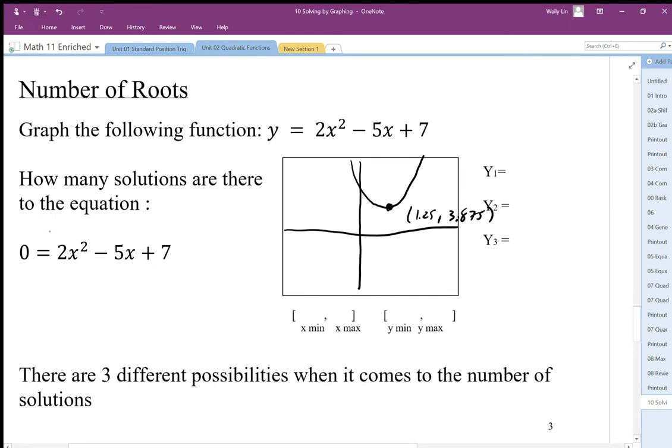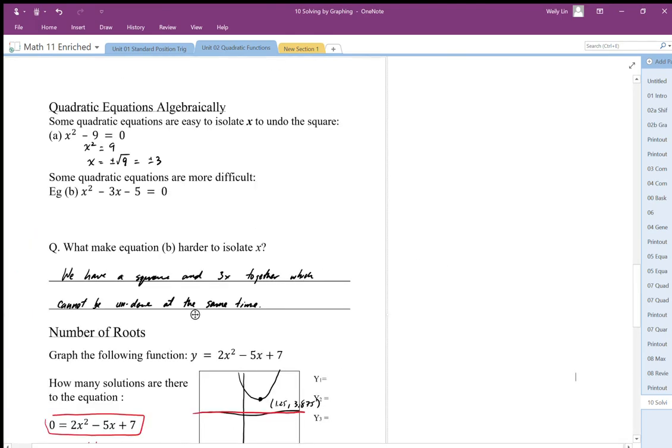The solutions happen where the graph crosses zero. Where this is equal to zero is along this x-axis here, and it does not cross that x-axis. So there must be no solution to this. We'll look at what that looks like algebraically a little later on, but right now we just know by the shape of the graph: physically it doesn't cross the x-axis, there cannot be a solution here.